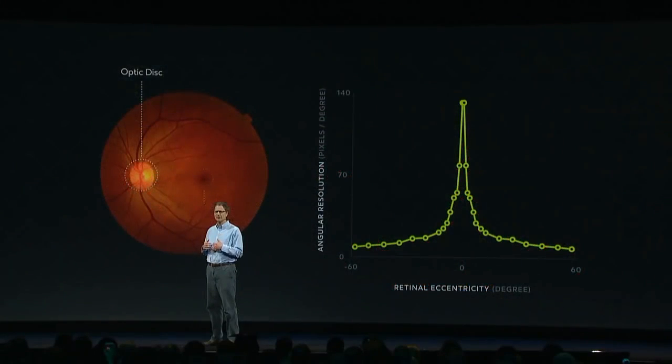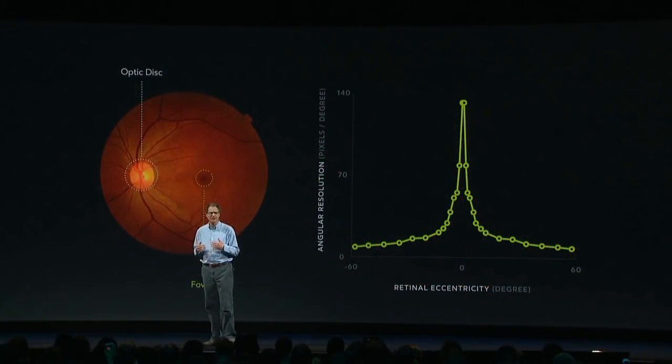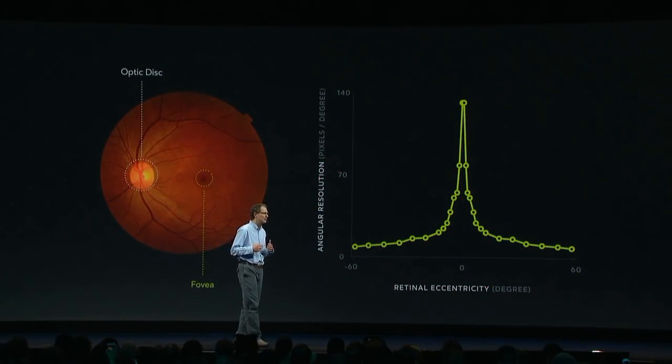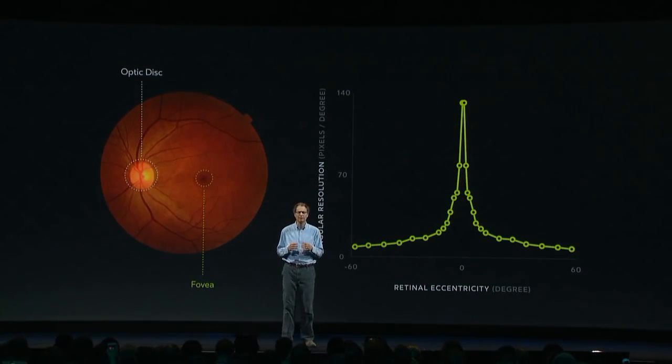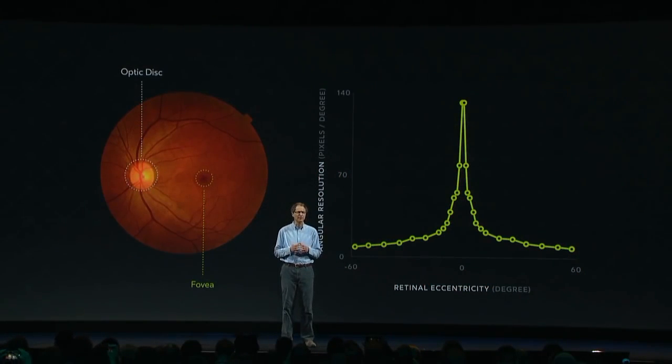As it happens, most of those pixels are wasted at any given time because the eye has only a very small area of full resolution. This area, called the fovea, is a mere three degrees across — the size of your thumb at arm's length — and resolution falls off rapidly away from the fovea.